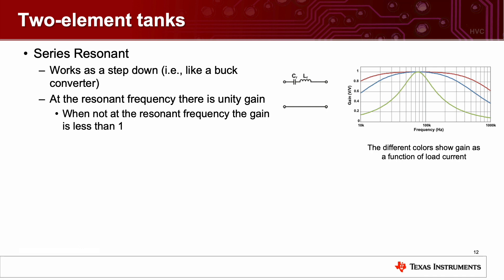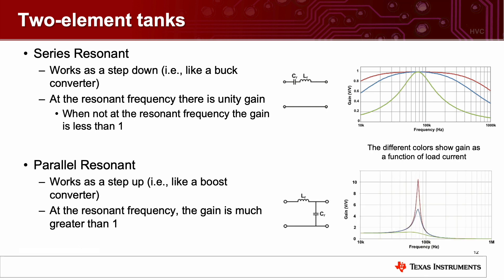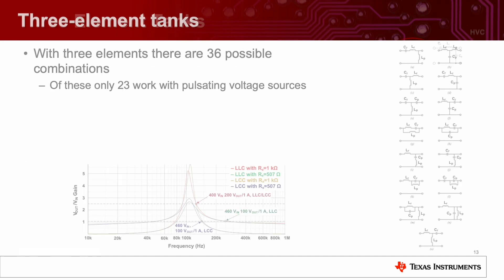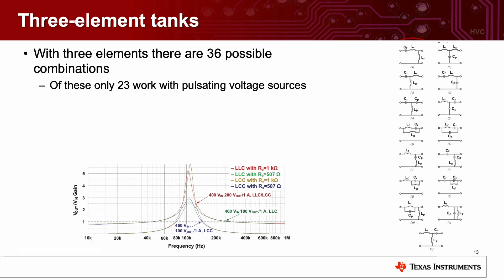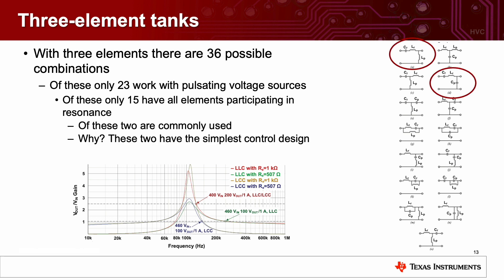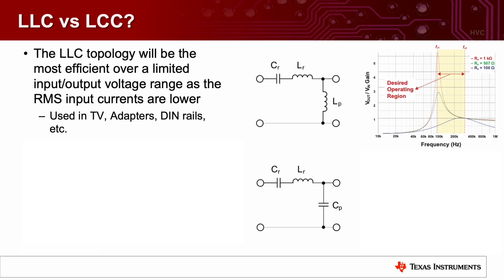You can make a resonant tank with only two elements. Here's an example of a series resonant tank. This works as a step down like a buck converter. At the resonant frequency, there's unity gain. When you're not at resonance, the gain is less than one. If you configure the L and C as a parallel resonant tank, this now works as a step up or like a boost converter. Here at the resonant frequency, the gain is much greater than one. With three element tanks, there are 36 possible combinations. Of these, only 23 work with pulsating voltage sources. Of these, only 15 have all three elements participating in resonance. And of these, only two are commonly used. And the only reason is these have the simplest control design.